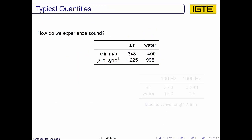Typical quantities we have when we experience sound are that in air we have a speed of sound of about 343 m/s. In water it's quite higher, about 1400 at ambient conditions. And we have a density in air of about 1.225 kg per cubic meter and water is about 998.